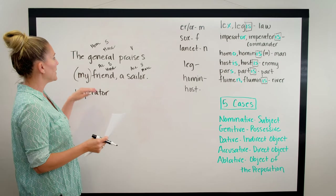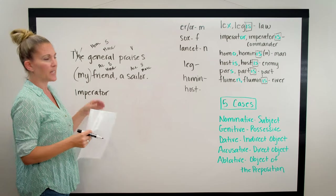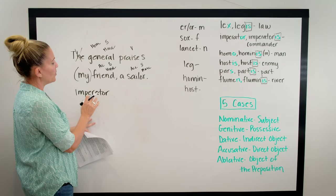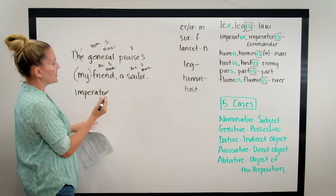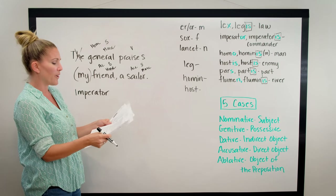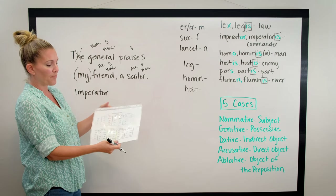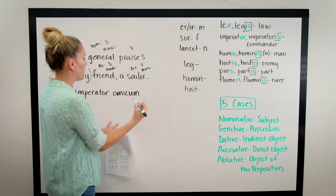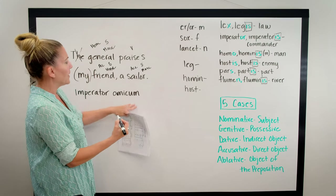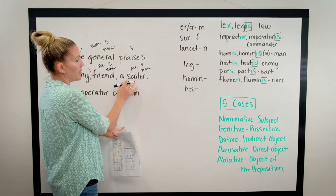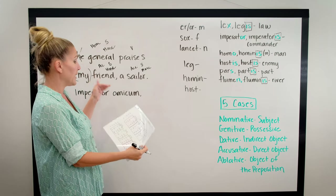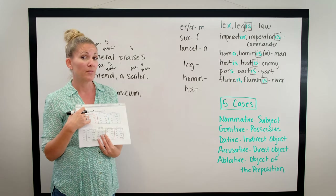Remember there's no such thing as 'the' in Latin. The verb comes last. The next word is 'friend' — an accusative singular masculine ending for a second declension word is UM. The word for 'friend' is 'amicus,' so it would be 'amicum.' Then I put 'sailor' into the same case — accusative singular — because it further identifies 'friend.' However, 'sailor' is in the first declension.